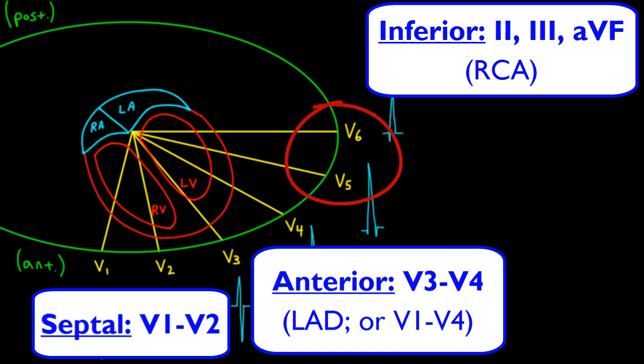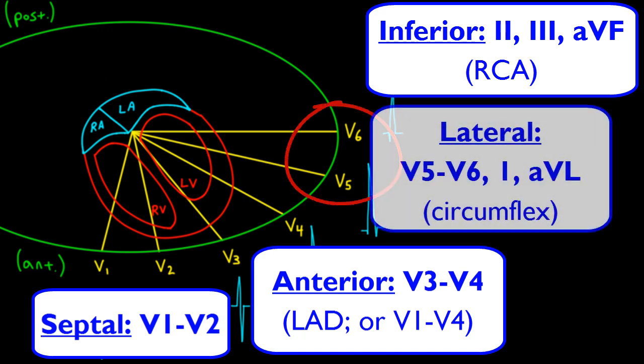Leads V5 and V6 along with leads one and AVL are known as the lateral leads. The lateral leads give us a good look at the lateral portion of the left ventricle, which is supplied by the circumflex artery.